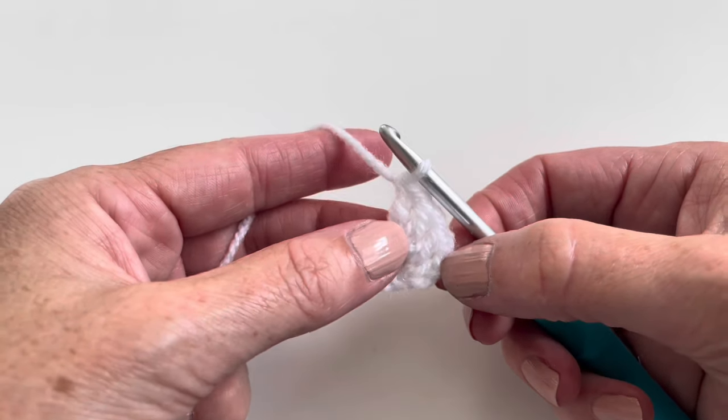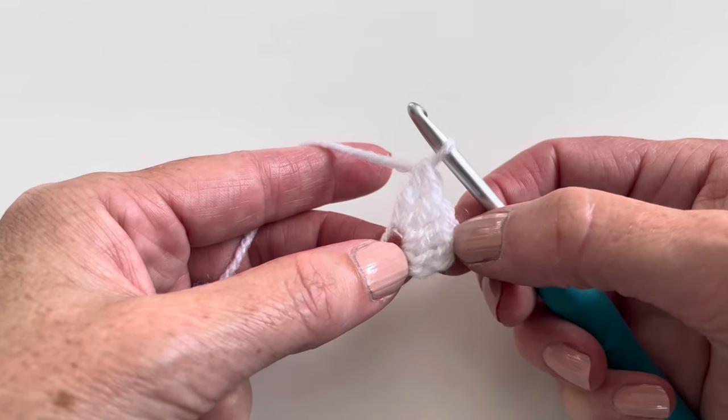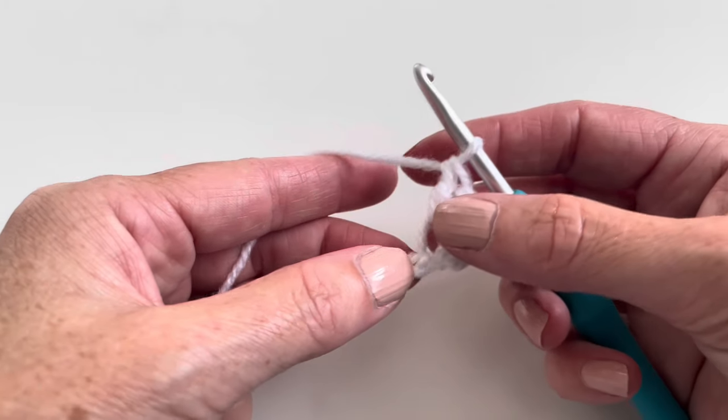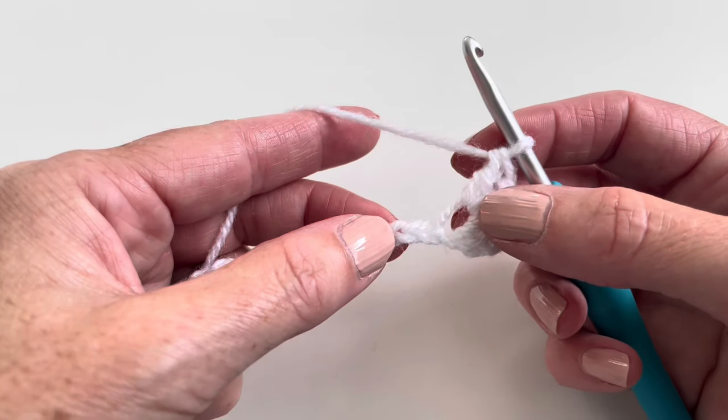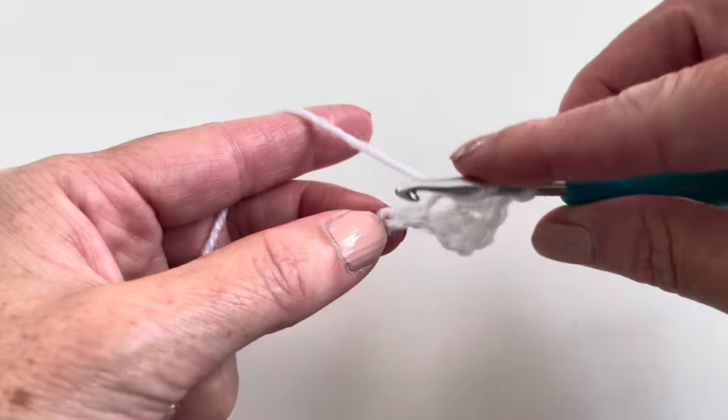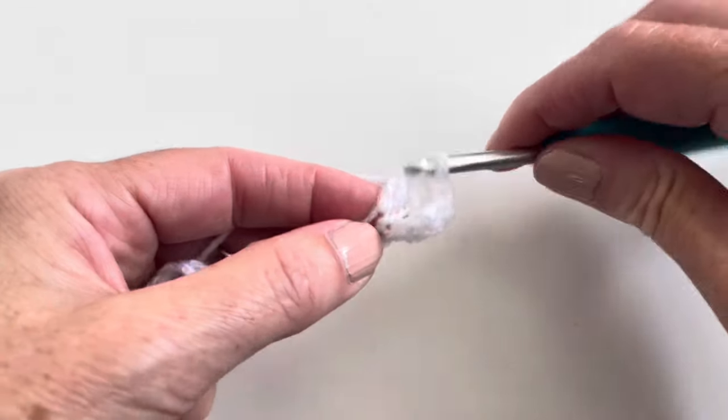So in the first chain I've made 3 double crochet plus this chain 3 of the beginning, which will count as 1 double crochet. And now in each next chain I will make 4 double crochet.